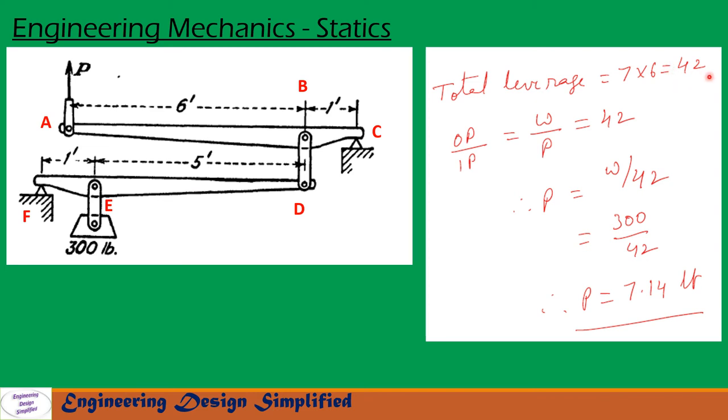The total leverage or mechanical advantage can be written as output by input. The output is the weight 300 lb and the input is P. So output by input is W by P, which equals 42, the total leverage. W is given as 300 lb, so from this we get P equals 300 by 42, which equals 7.14 lb.